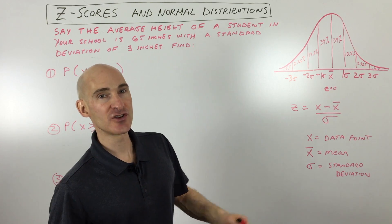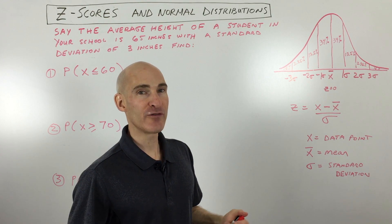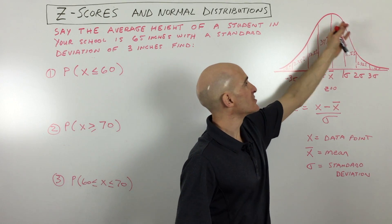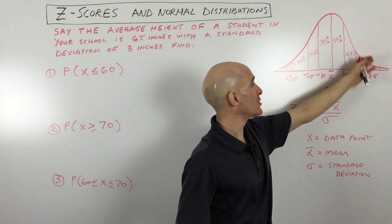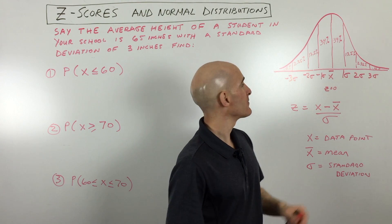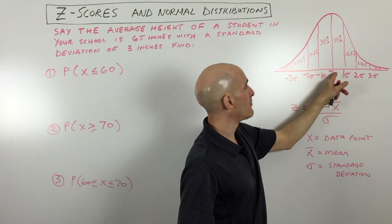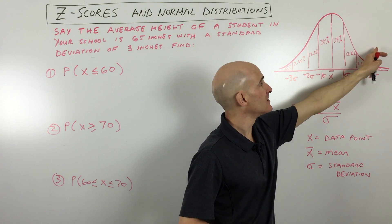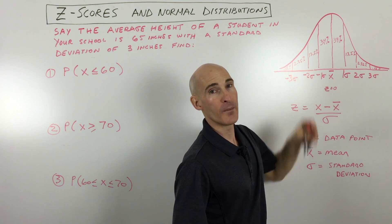If you have a population and you're studying some aspect of that population, your data is distributed in a normal distribution, sometimes referred to as a bell curve because of the shape. Right down the middle here is the x-bar — that's the mean. 50% of the data is going to be above the mean, and 50% is going to be below.